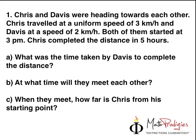Question number 1 says that Chris and Davis were heading towards each other. Now whenever you have questions like this, you already know one thing. You must add the two speeds together in order for you to find the time. So Chris travelled at a uniform speed of 3 km/h, and Davis at a speed of 2 km/h. Both of them started at 3 p.m.